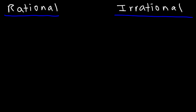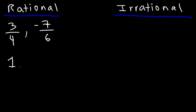A rational number is any number that can be written as a ratio of two integers. For example, a fraction like 3 over 4 is a rational number, or negative 7 over 6. These are rational numbers because you can write them as a ratio of two integers. And remember, integers are basically whole numbers, natural numbers, or even negative numbers like these. These are all integers.